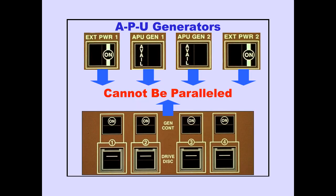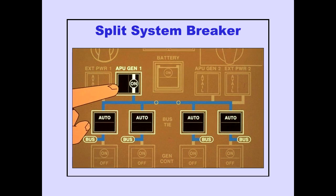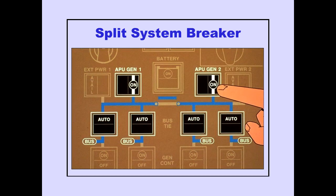External power or APU generators cannot be paralleled with each other or with an IDG. A split system breaker, referred to as SSB, divides the synchronous bus; each side may be powered by a separate auxiliary power source. Before engine start, pushing one APU generator or external power switch automatically closes the split system breaker, and the selected source powers both sides of the synchronous bus. Pushing a second APU generator or external power switch on the opposite side of the synchronous bus automatically opens the split system breaker, so each source powers its respective side.